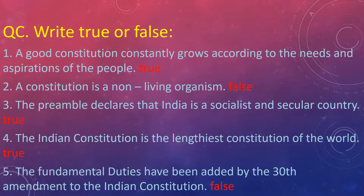Our next question is: write true or false. Five sentences are given — some are right and some are wrong. For the right sentence, we write true; for the false sentence, we write false. Sentence number one: a good constitution constantly grows according to the needs and aspirations of the people. This is true — our constitution is a written constitution and, according to the needs, it grows accordingly.